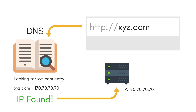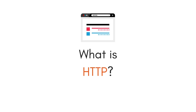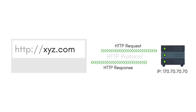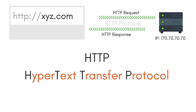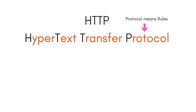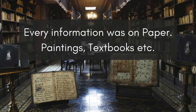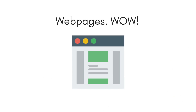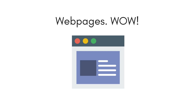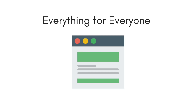Now that we know how a request reaches the server, it's time to understand more about the request itself. A web server and a web browser communicate via HTTP protocol. HTTP protocol is nothing but a set of rules defined for sending and receiving web pages — HTML documents — over the internet. HTTP stands for Hypertext Transfer Protocol. Hypertext is nothing but structured text, and HTML is Hypertext Markup Language, a markup language used to create hypertext documents, which are nothing but web pages. Earlier, information was exchanged in plain text form, but web pages came as a new way of presenting information in a more structured way with headings, images, different colors and fonts — all available for everyone on the internet.